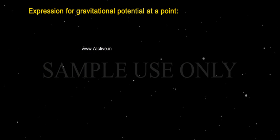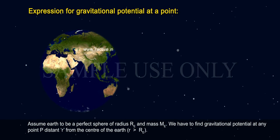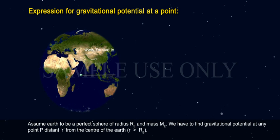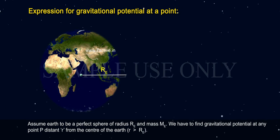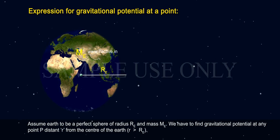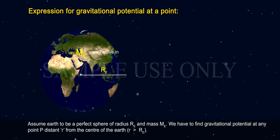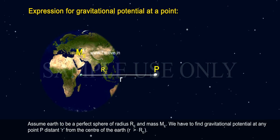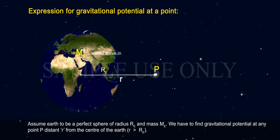Expression for gravitational potential at a point: Assume Earth to be a perfect sphere of radius Rₑ and mass Mₑ. We have to find gravitational potential at any point P distant R from the center of the Earth.